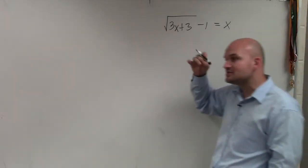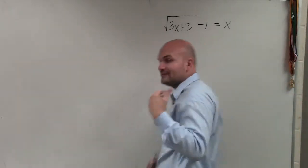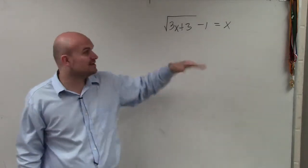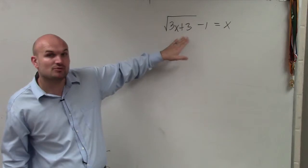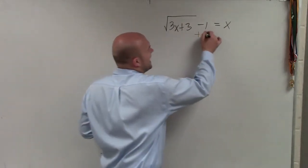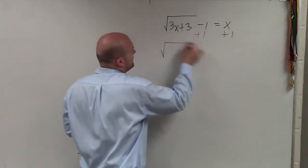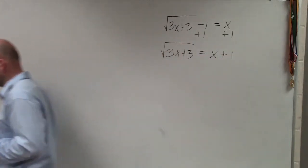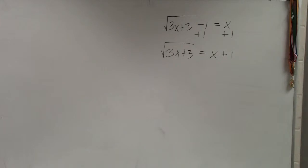So to be able to do that, the first thing we need to do is we need to undo that square root. So to undo the square root, what we simply need to do is we need to first isolate the square root. So the first thing we do is we're going to add 1. So therefore, I have the square root of 3x plus 3 equals x plus 1. Does everybody see how I isolated the square root?